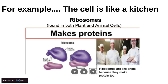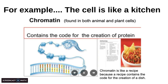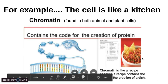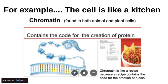Here's one more example to get you started. I know that the chromatin contains the code for the creation of protein, or it contains the directions for the ribosomes to build that protein. So I'm going to compare the chromatin to a recipe. Here's my reasoning: chromatin is like a recipe because a recipe creates the code for the creation of a dish. That recipe tells me what to do to make the dish in the same way that chromatin tells the cell what to do to create the proteins.